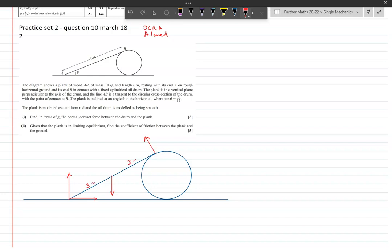And we're told the weight of the rod. Well, we're told the mass is 10, so the weight is 10g. We're told the angle, actually I'm just going to mark it as theta rather than actually work out the angle.